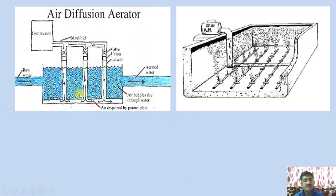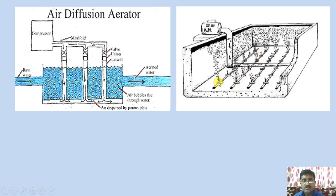In the diffusion aerator, a compressor is used with manifold pipes and a porous system to create bubble action, giving maximum exposure of water to air for proper aeration. In some configurations, nozzles are used instead, through which compressed air is introduced to form air bubbles and produce aerated water.